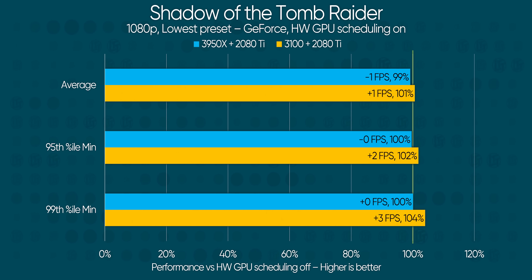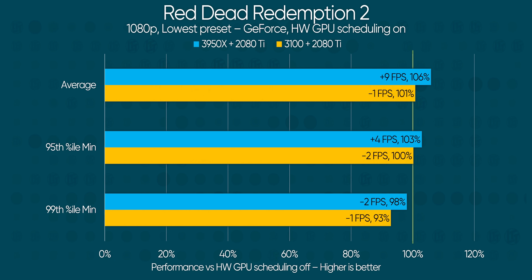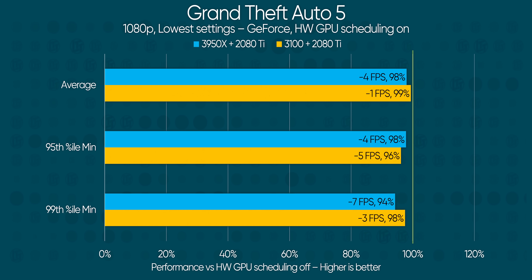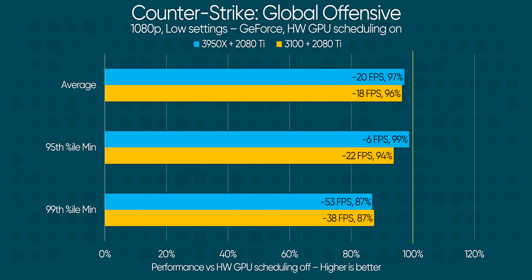At 1080p with low settings, we're stressing the CPU more than the GPU, and in most of the games we tried, hardware accelerated GPU scheduling actually doesn't seem to work out all that well for us. We're typically looking at roughly the same or slightly faster or slightly slower performance depending on the game, despite the theoretical advantages we should be seeing. As frame rates get higher, as in Doom Eternal and CSGO, that performance gap widens significantly, with as much as 13% performance lost in our minimum frame rates. So it seems that despite being CPU-bound in this scenario, offloading the GPU scheduling from the CPU isn't really helping — at least not with these early drivers.